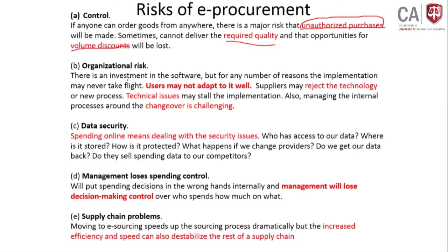Organization risk: users may not adapt to the system well. If something was previously done manually and is now fully online, staff who are not knowledgeable or not keen to operate the system will reject it. There are also many technical issues — changing how systems work is very challenging, and internal process changes around the changeover are also very challenging.